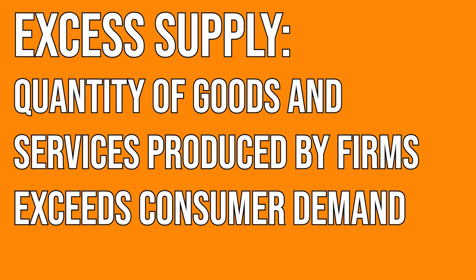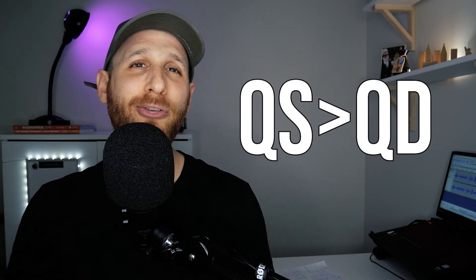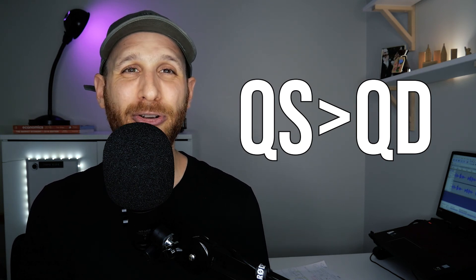Excess supply is where quantity supplied exceeds quantity demanded. One way to think about it: you go to the store and there's a whole bunch of t-shirts — maybe for a sports team that didn't do well, or a brand people are no longer excited about — and the store can't get rid of them. The quantity supplied is exceeding quantity demanded. Whenever you see an overstock clearance or 'everything must go' sale, that's an example of excess supply. The producers have produced too much at that price for the market, so we're at a position of disequilibrium.